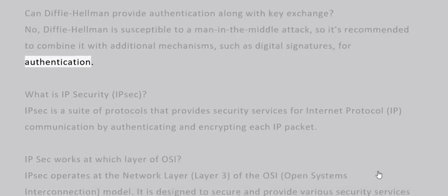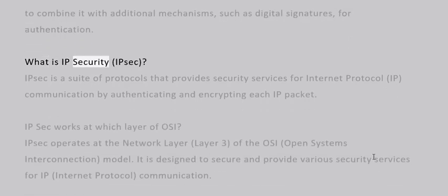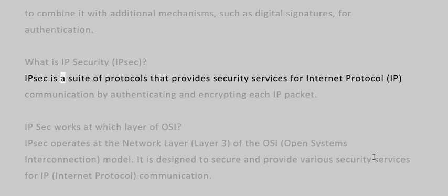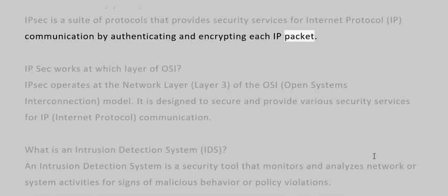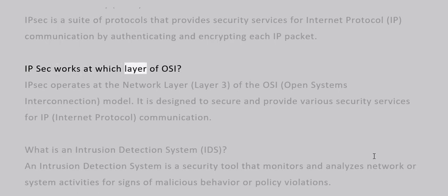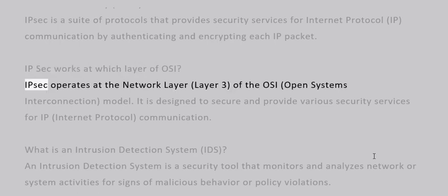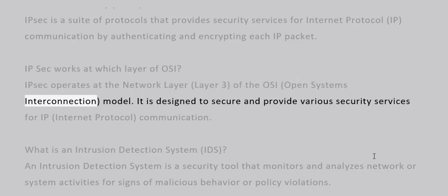What is IP security? IPSec is a suite of protocols that provides security services for Internet Protocol (IP) communication by authenticating and encrypting each IP packet. At which layer of the OSI model does IPSec operate? IPSec operates at the network layer — Layer 3 — of the OSI model, designed to secure IP communication.